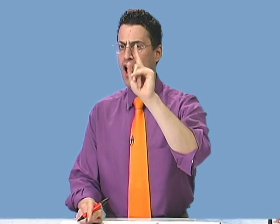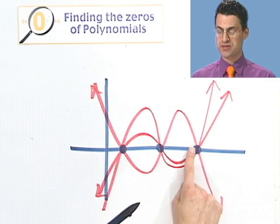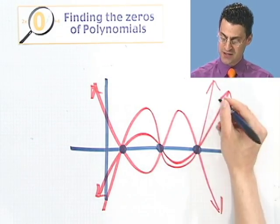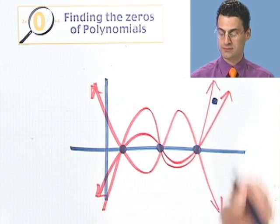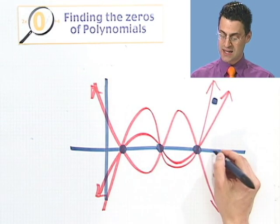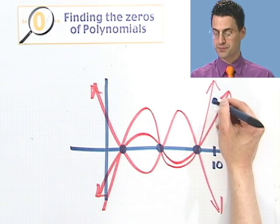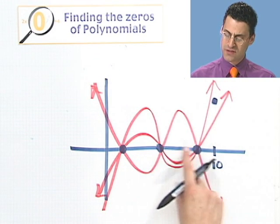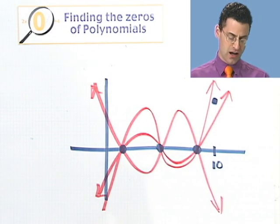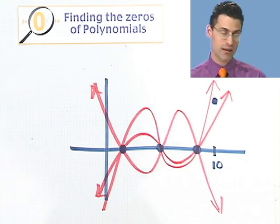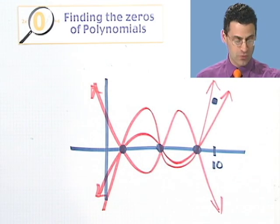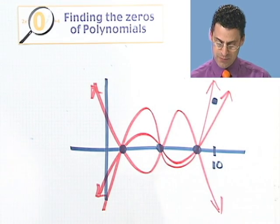However, if I tell you the roots and just one other point that the function actually satisfies. So maybe I say, okay, it has these three roots. And you know what? It also passes through this point right here. So I say, you know, at 10, I know the function's going to be 7. Then those four points, believe it or not, completely determine that cubic. And there's only one cubic, only one cubic that's going to pass through all those things.